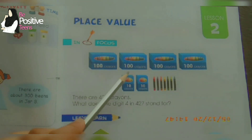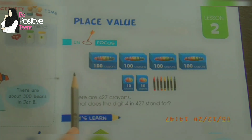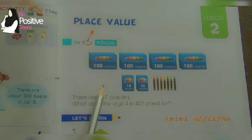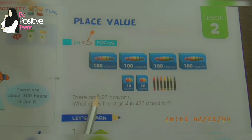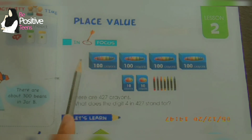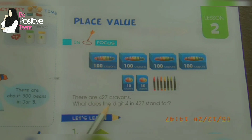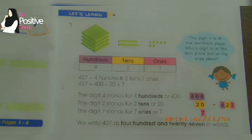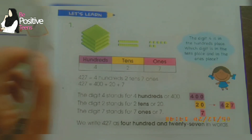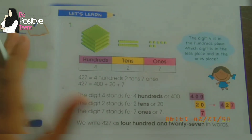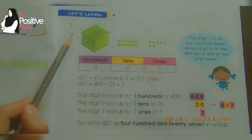When we write it all together we write four hundred and twenty seven — that is 427. The digit four in 427 indicates hundreds. It indicates one hundred, two hundred, three hundred, four hundred — there are four hundred crayons. So the digit four in 427 indicates how many hundreds there are.